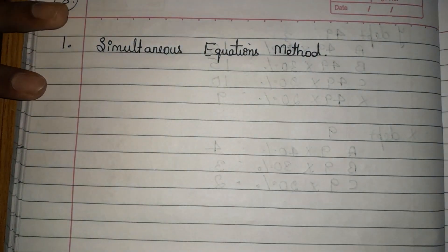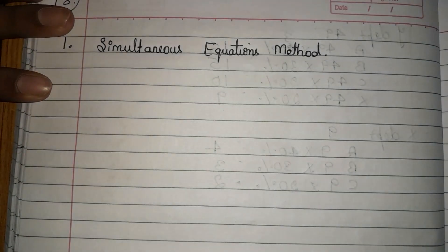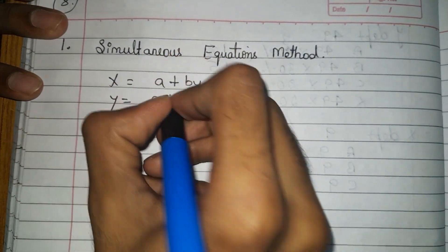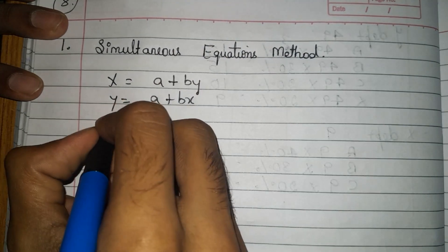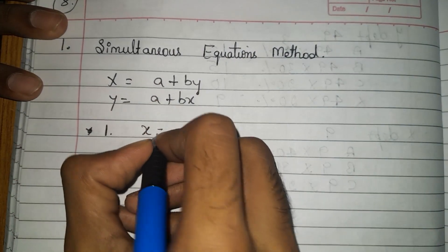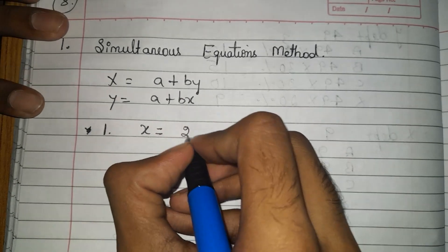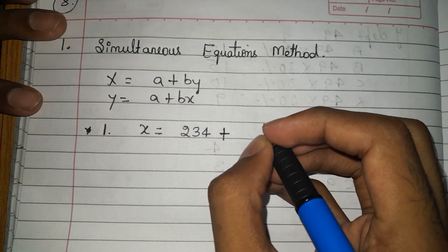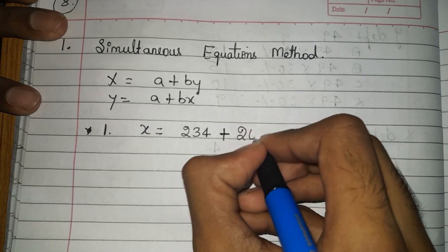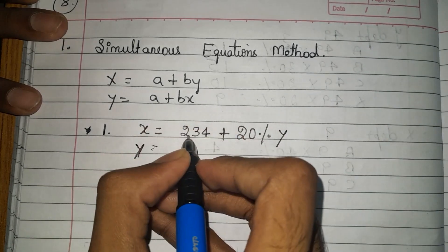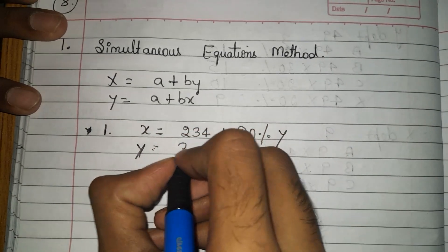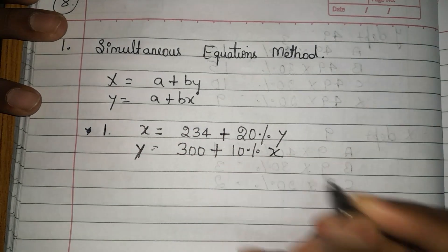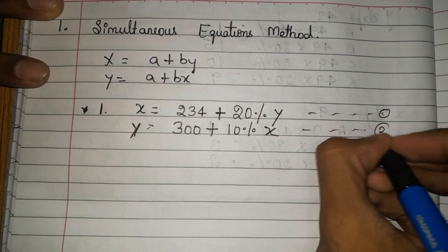Under the simultaneous equation method, we follow two equations: x = a + b(y) and y = a + b(x). For department 1: x = 234 + 20% of y. For department 2: y = 300 + 10% of x. This gives us equation one and equation two.